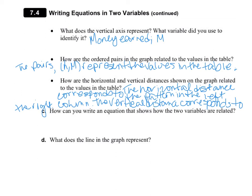Letter C, how can you write an equation that shows how the two variables are related? So we can do that by thinking about what this graph is showing us. It's showing us that the money that we earn equals the hours that we work times $8. So that's our equation showing the relationship between these two variables.